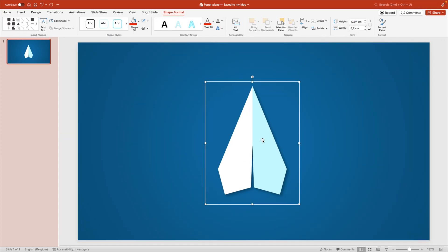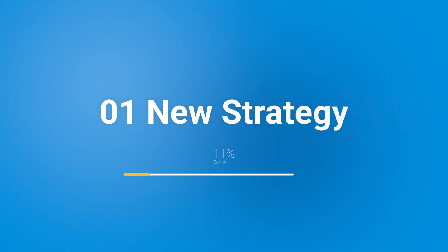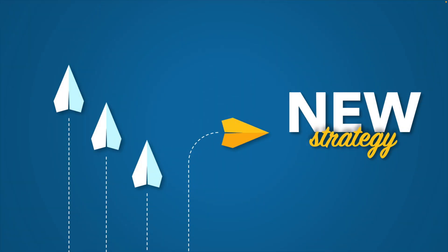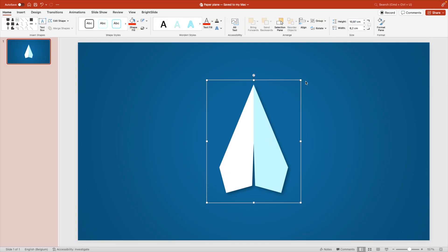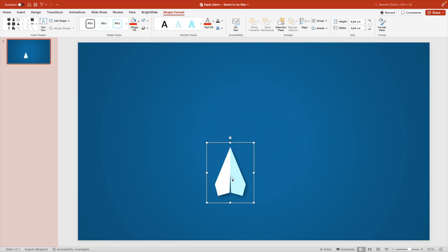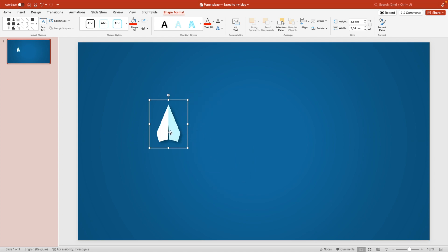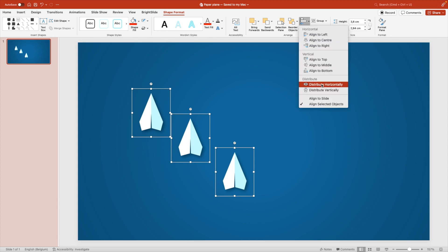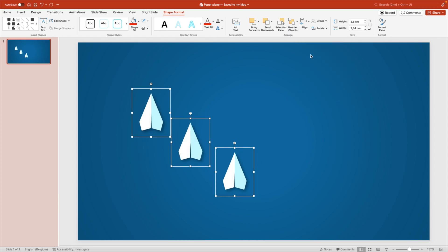Now let's look at some variations. The first one is a 'New Strategy' slide, featuring three airplanes flying straight ahead while one takes a sharp turn toward the new strategy. Create three copies and place them on the left, roughly below each other. Select all three, then use Align and Distribute Vertically to ensure even spacing between them.